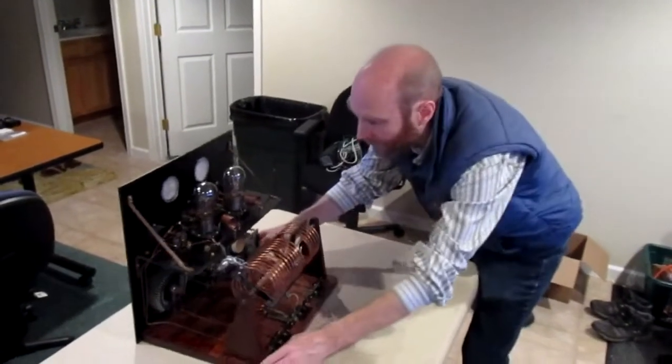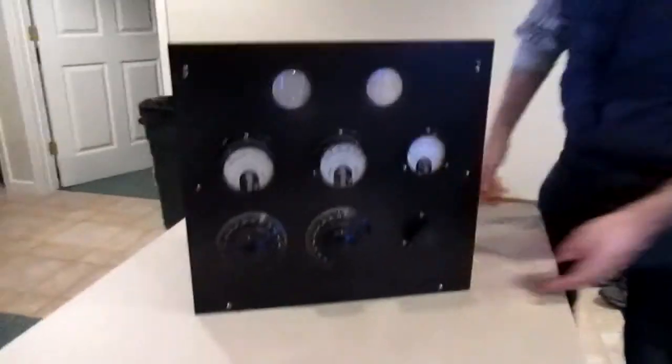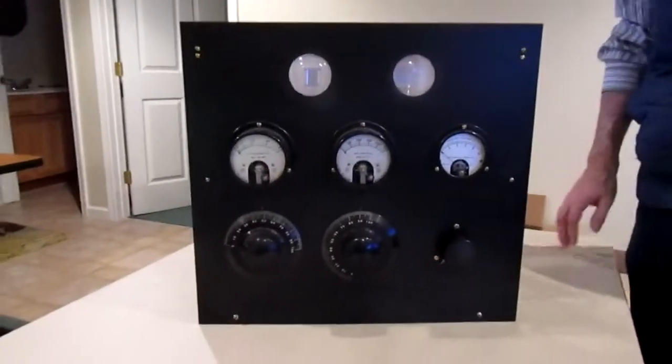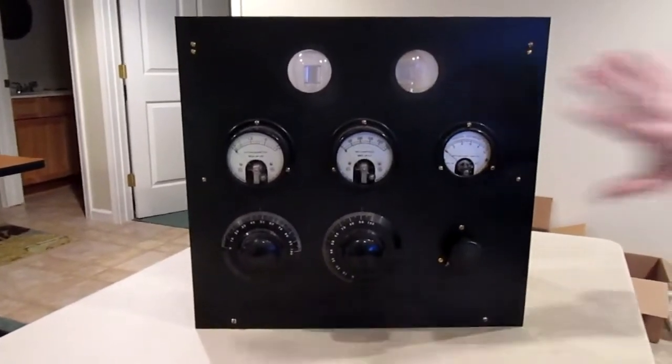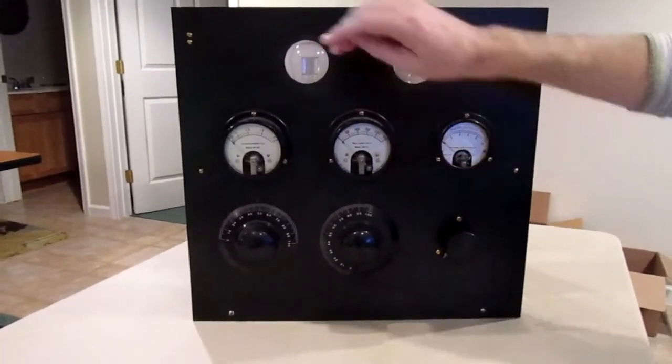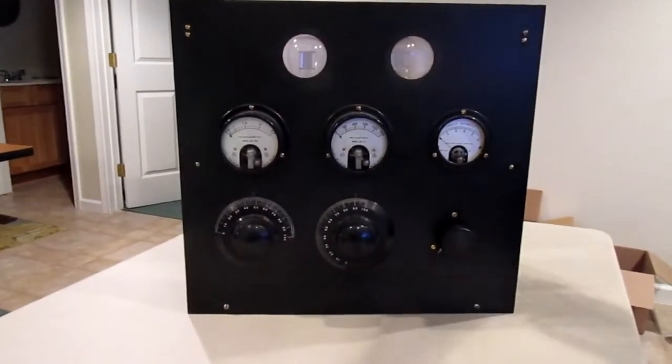And I can spin it around here. I tried to make a panel kind of in the vertical style that you saw in the early twenties. Beautiful thing. Yeah. So, you know, you have, you got filament, plate current, and then your antenna coupling, which is very optimistic with a three amp meter there.